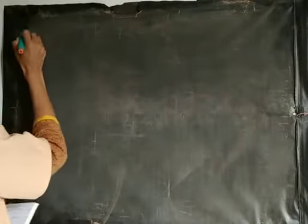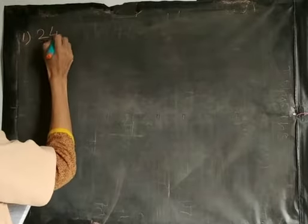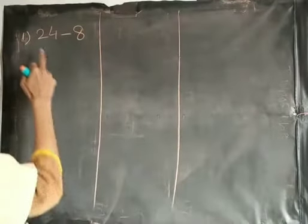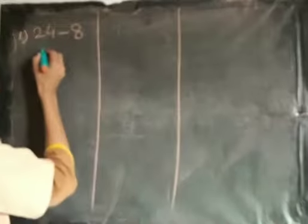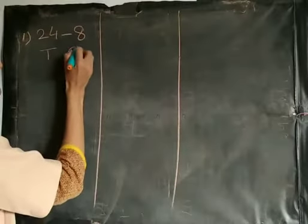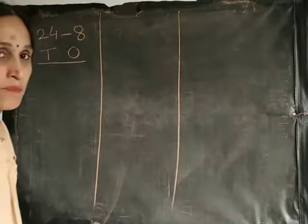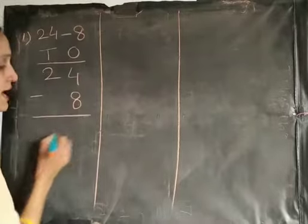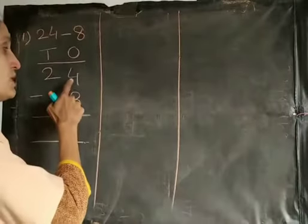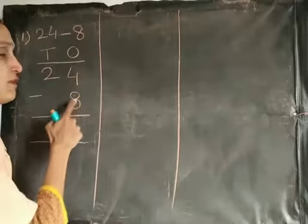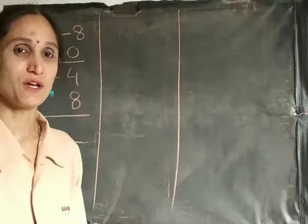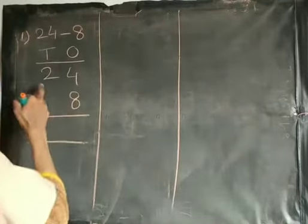We will start. The first example I will write is 24 minus 8. This is the subtraction of a two digit number with a single digit number. So we need to mark the columns as 10s and 1s. 24 minus 8. 8 is a single digit number, so we have to write it in the 1s column. See the columns carefully. 4 minus 8 — 4 is the smaller number and 8 is the bigger number, so we can't subtract 8 from 4. So we need to borrow 1 from the 10s column.